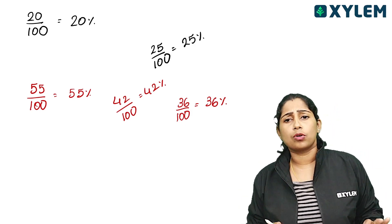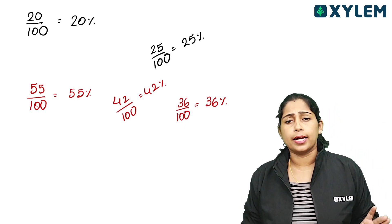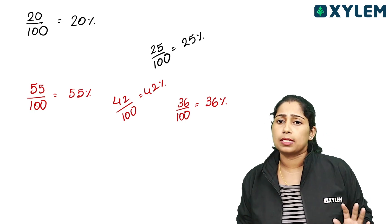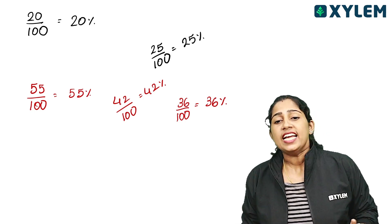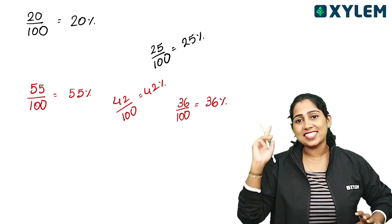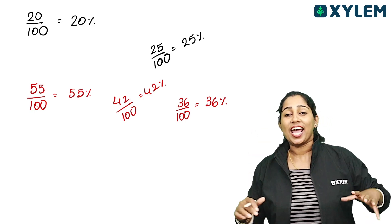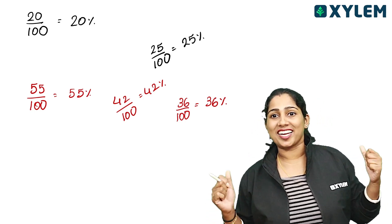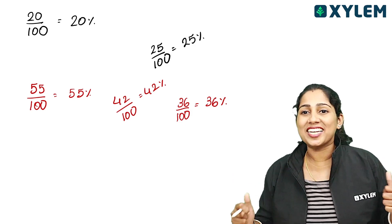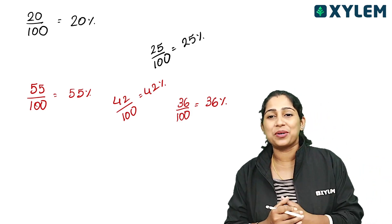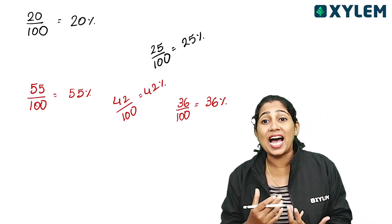Out of 100. 36 by 100 — that is the percentage. Here is an example: in an exam, marks are given and we make a comparison.